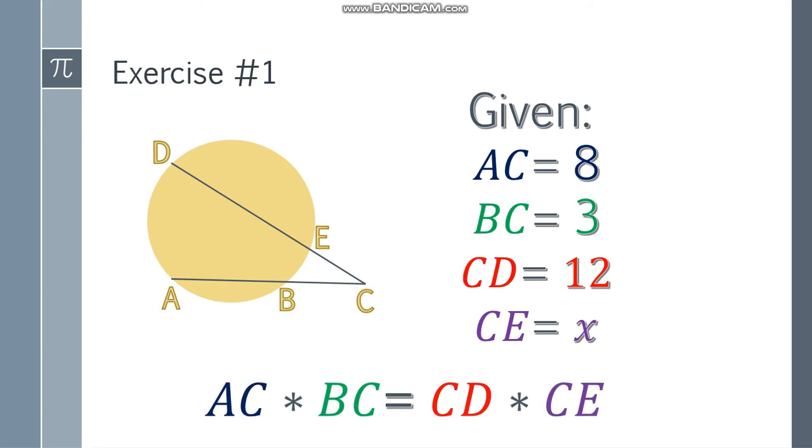Using the formula, AC times BC equals CD times CE. Again, it depends on the figure - don't depend too much on the variables. The whole secant times the external segment equals the whole secant on the other side times its external segment. Substitute: 8 times 3 equals 12 times x.